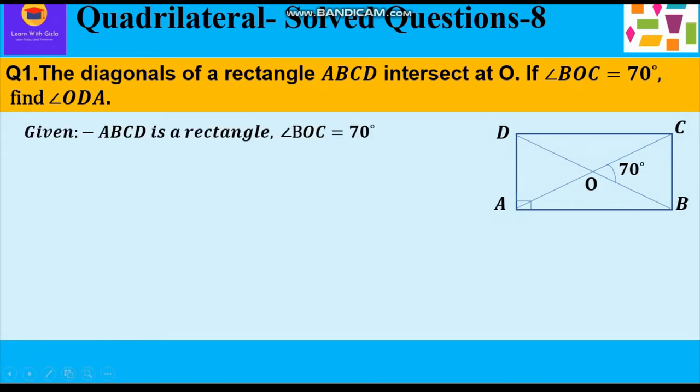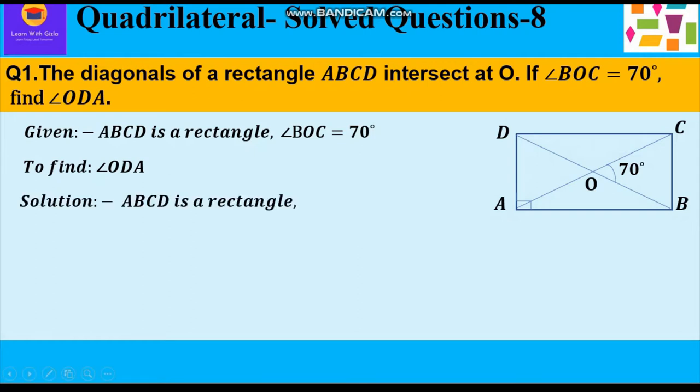As you can see in the given figure, ABCD is a rectangle and angle BOC is equal to 70 degree. We have to find angle ODA.